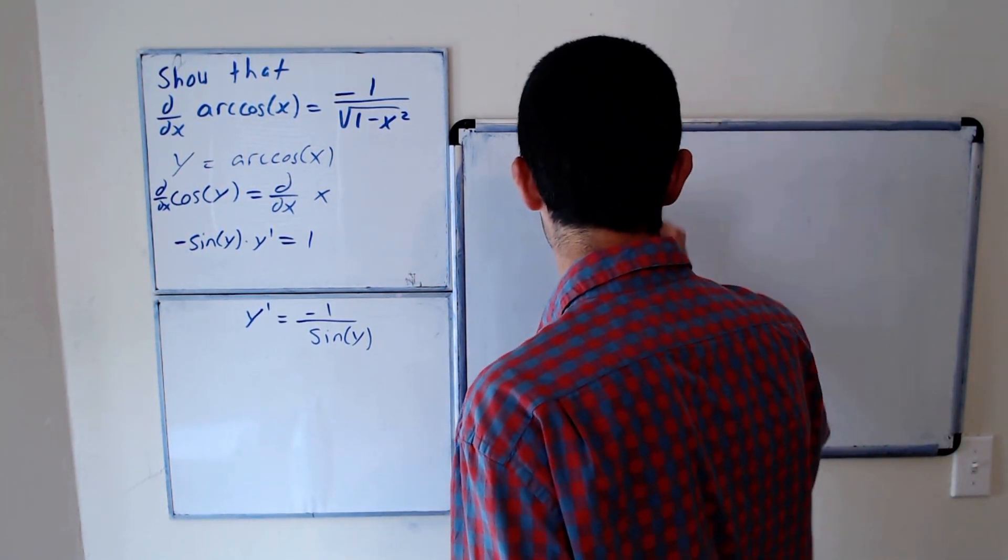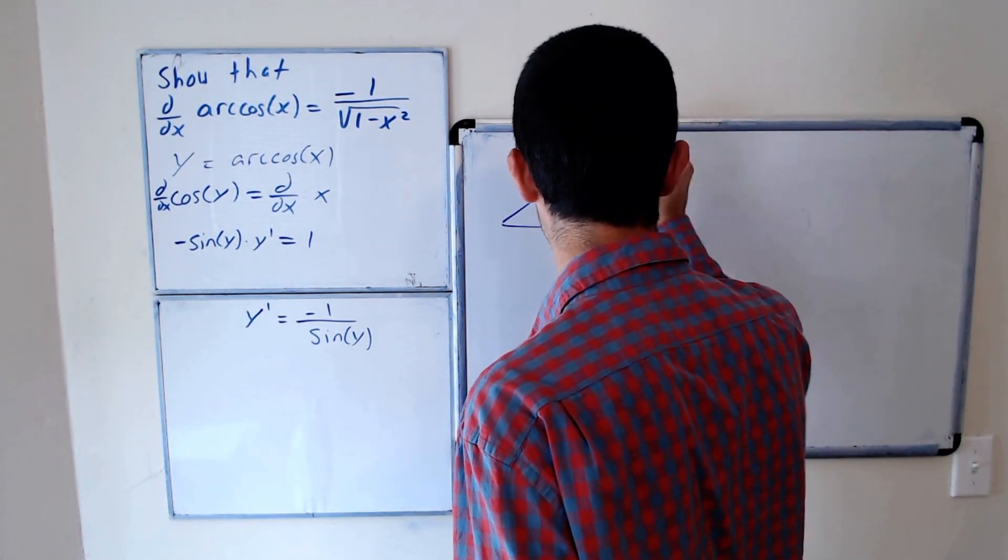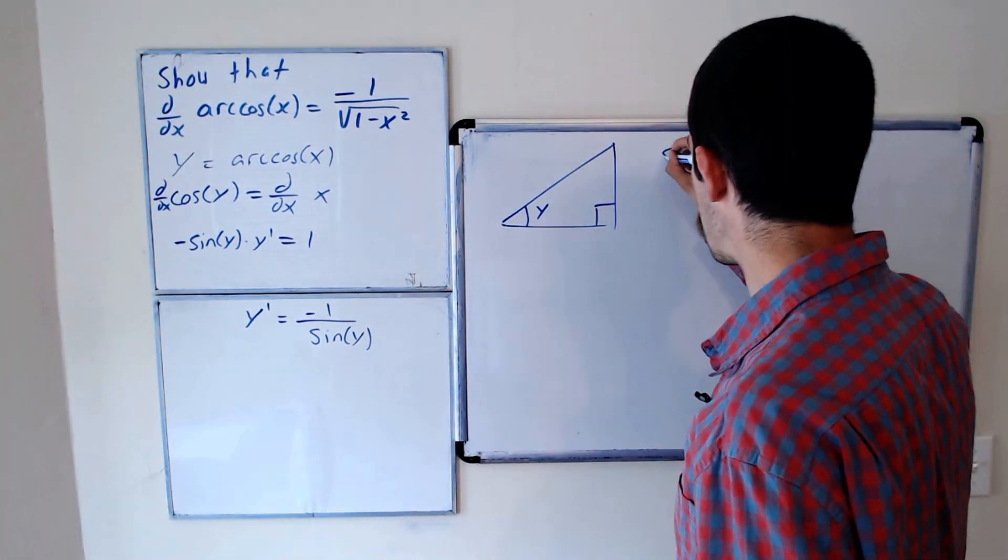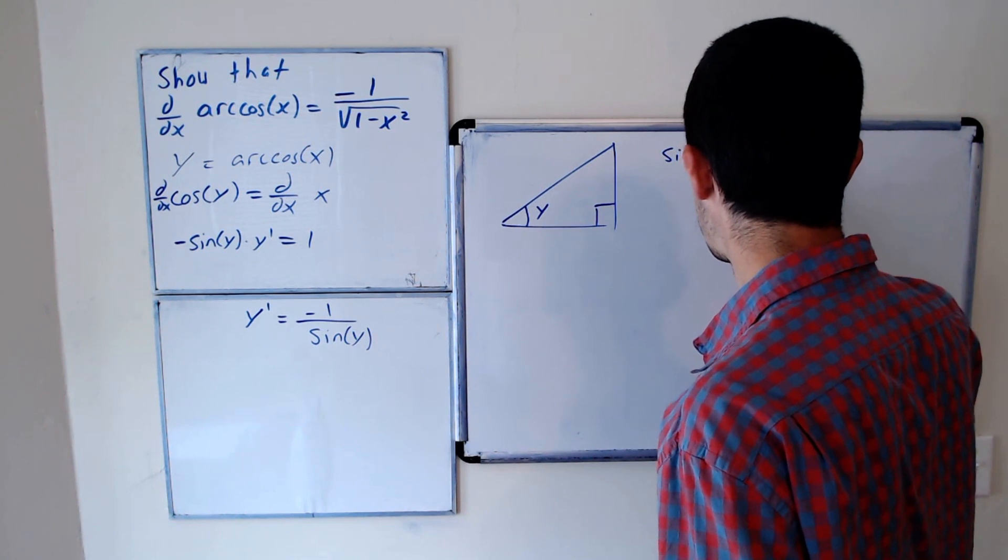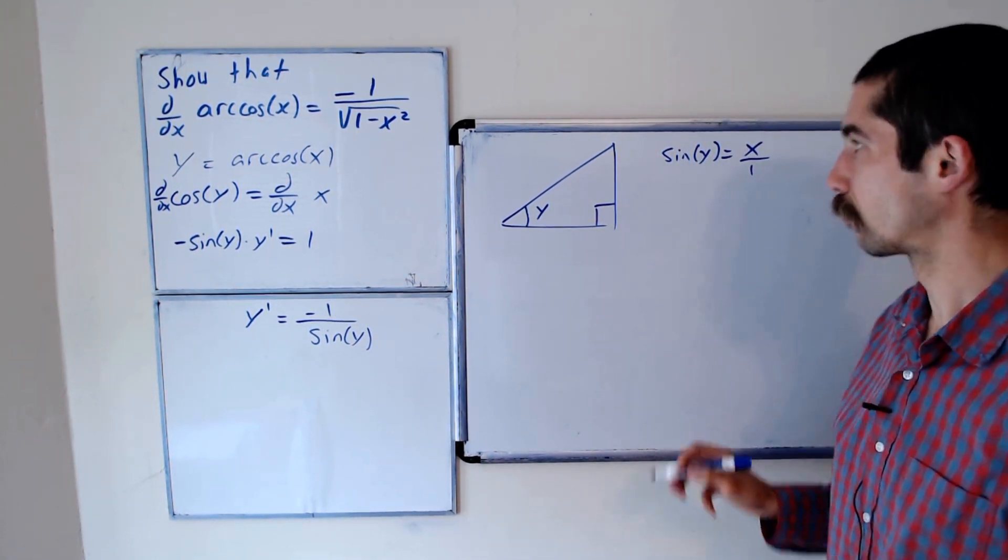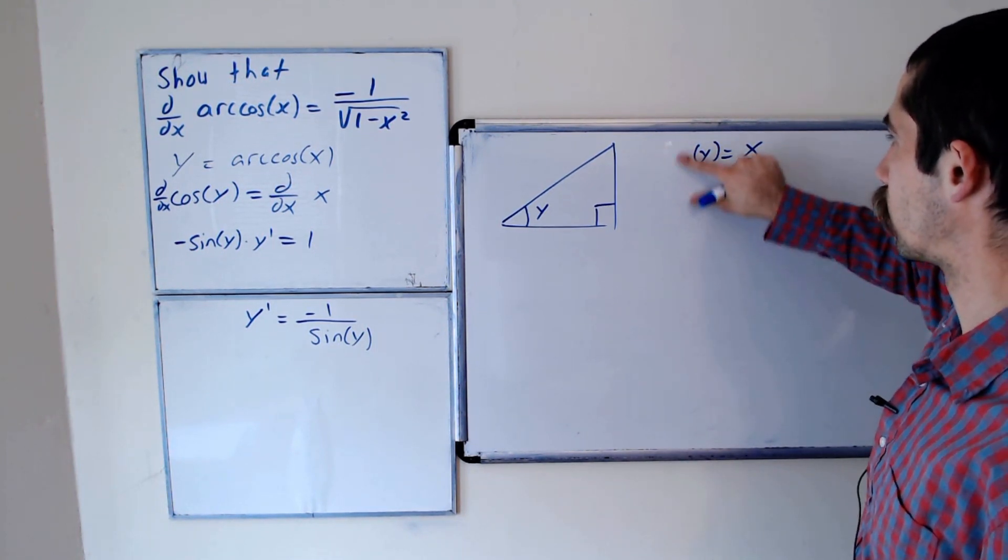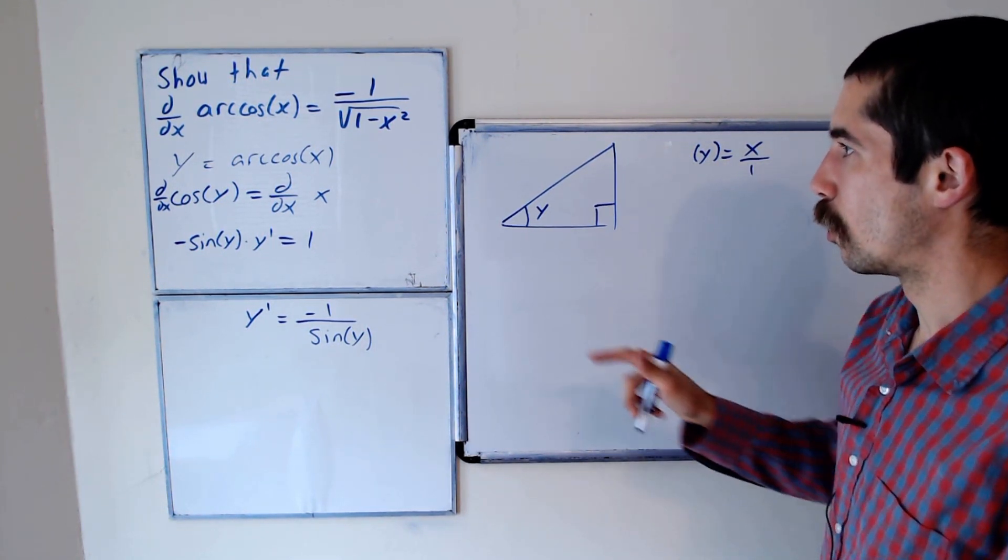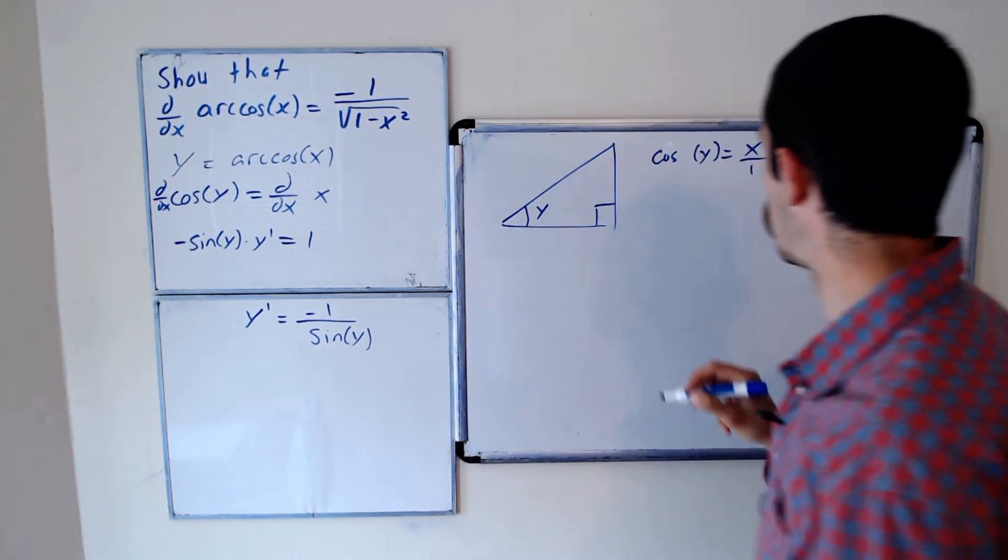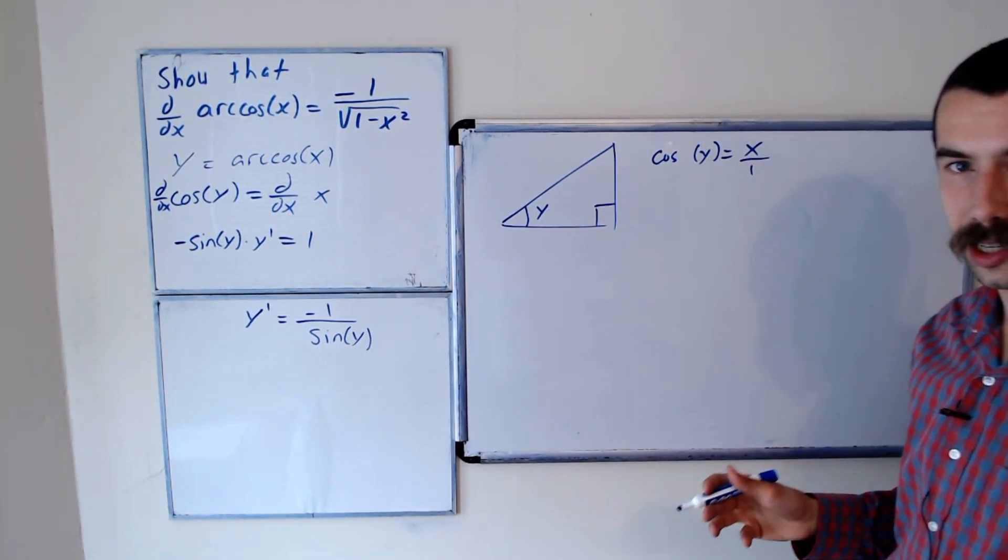So consider the right triangle with angle y. We know sine of y is equal to x. Well, let's write it as x over 1. Okay, so, oops, we don't know that sine of y equals x over 1. We know cosine of y is equal to x over 1.